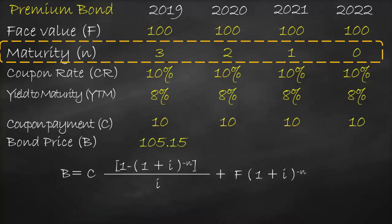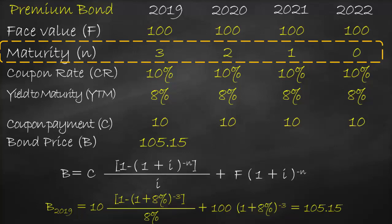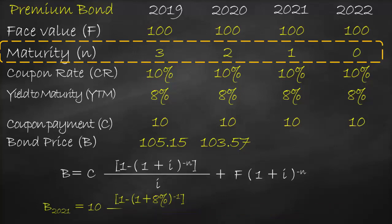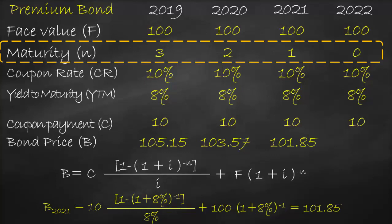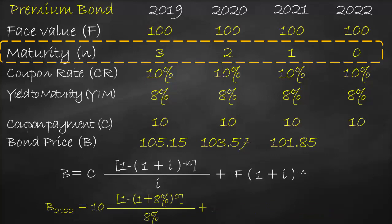For year 2020, I change N from 3 to 2, and the bond price becomes 103.57. For year 2021, I change N to 1, giving a bond price of 101.85. For year 2022, I change N from 1 to 0, and this gives a bond price of 100.